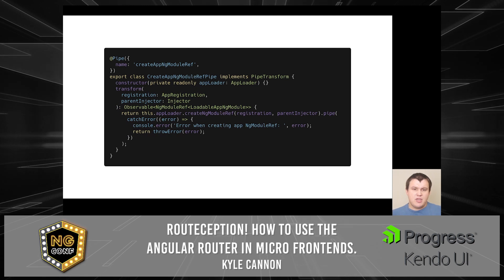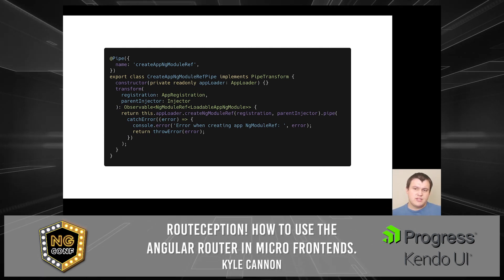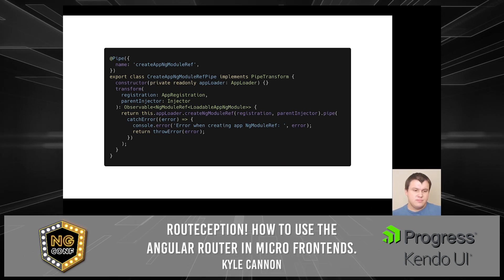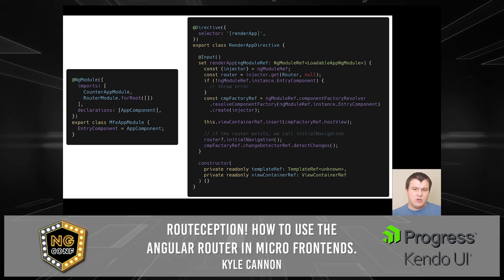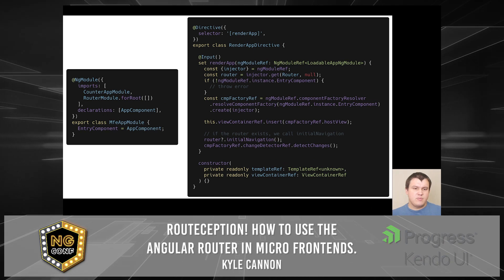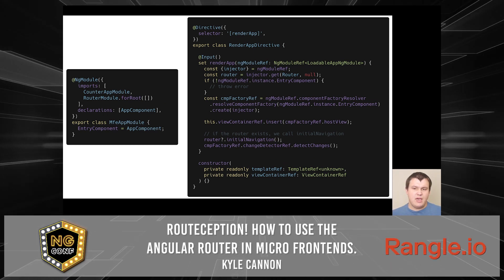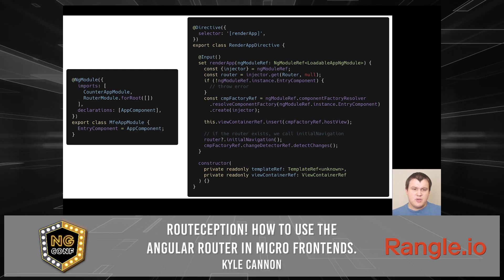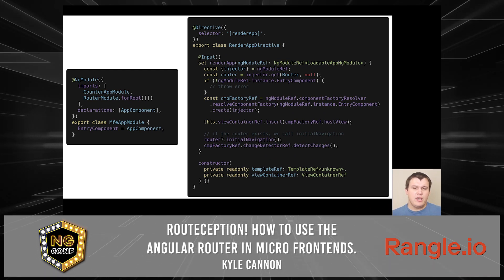The next step is to make a pure pipe that utilizes the app loader's create ng-module ref function, which accepts the app registration and the parent injector. From there, we need to render our app module. So we create a structural directive that accepts the ng-module ref as the value. From there, we extract the injector and the entry component from our MFE app module instance. This allows us to specify what component to render in a reusable and predictable way.